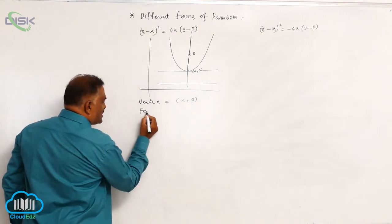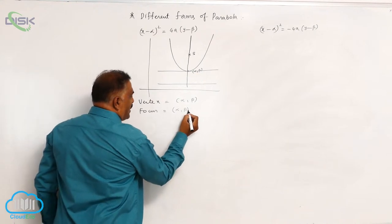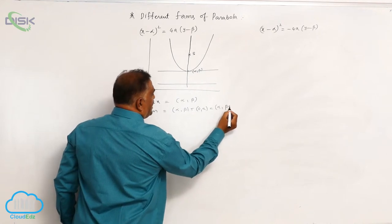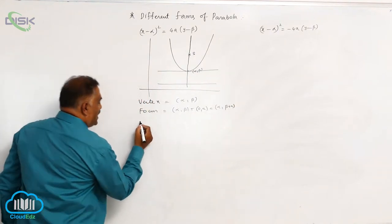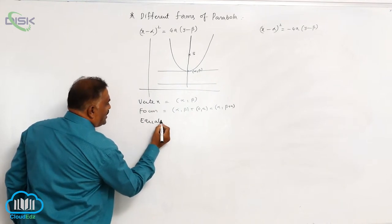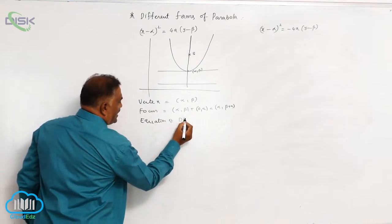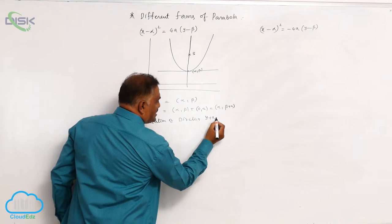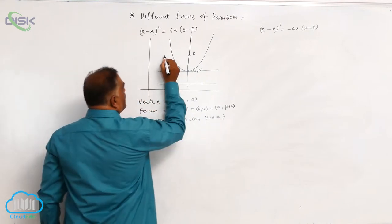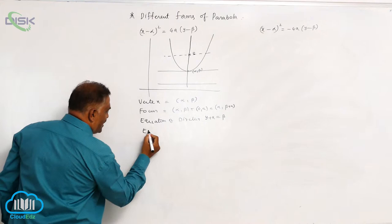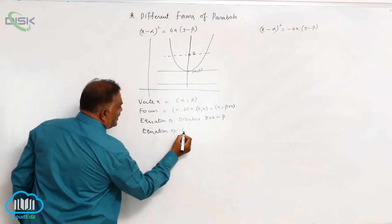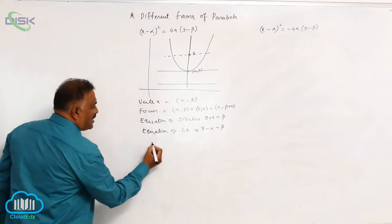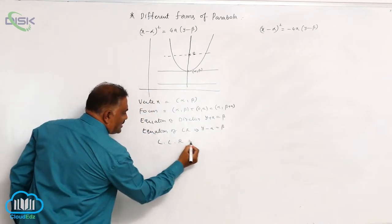The focus is equal to alpha comma beta plus a, since the previous standard focus is 0 comma a. Then comes the equation of directrix. Previously it is y plus a equal to 0; now it becomes y plus a equal to beta. Then comes the equation of latus rectum, which is y minus a equal to beta.